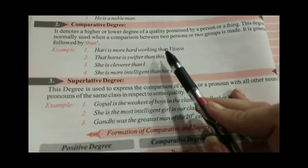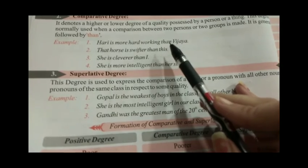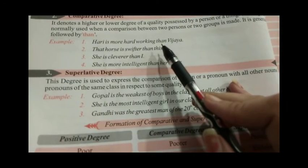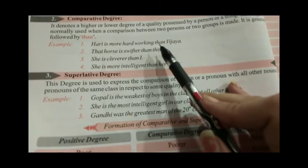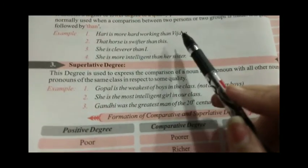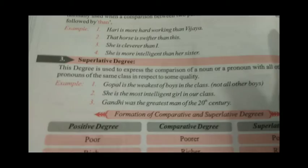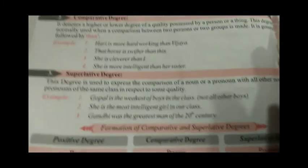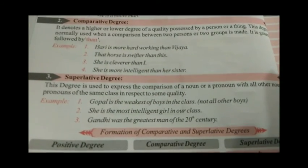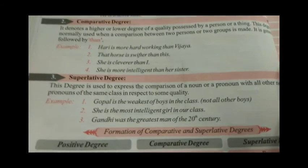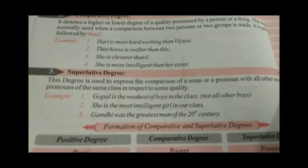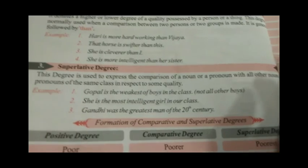In the next video we will continue with superlative degree and study more examples of positive and comparative degrees. Till then, remember the six kinds of adjectives and the two degrees we studied today. We will continue with more details in the next video.